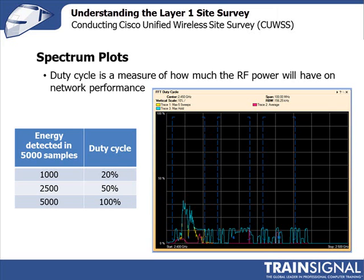The Cisco Spectrum Expert uses two measurements to calculate duty cycle: the percentage of time the RF signal is 20 dB above the noise floor, and the percentage of time a transmission from a known device is present in the channel or band. Looking at the FFT duty cycle with trace 3 on to show the maximum, at peak you can see a little over 30 percent duty cycle in part of the band.